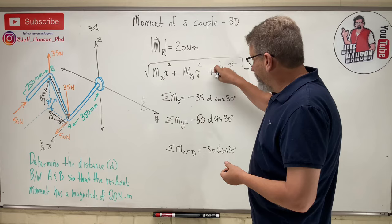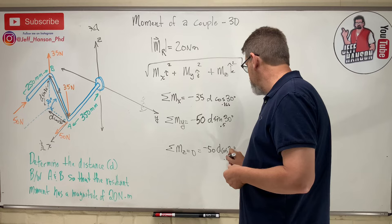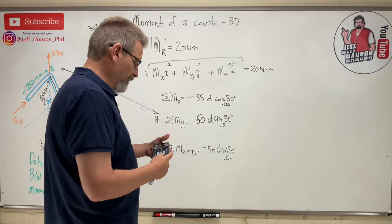The cosine of 30 is 0.866, the sine of 30 is 0.5, the cosine of 30 is 0.866. Let me just simplify this a little bit with my calculator. 35 times 0.866 equals 30.31.